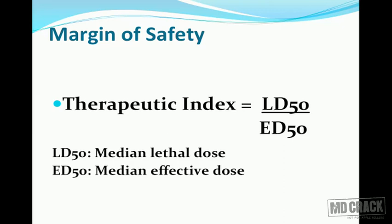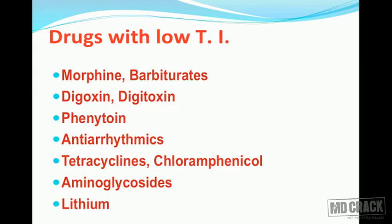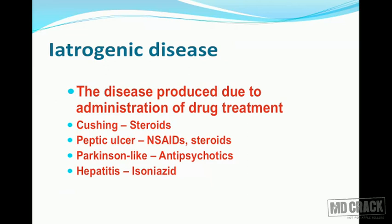The therapeutic index formula is median lethal dose (LD50) divided by median effective dose (ED50). It can also be calculated as median toxic dose divided by median effective dose. Drugs with a very high therapeutic index are comparatively safer and include penicillins and cephalosporins, macrolide antibiotics, aspirin, ibuprofen, and paracetamol. Drugs with a low therapeutic index include morphine, barbiturates, digoxin, digitoxin, phenytoin, anti-arrhythmic agents, tetracyclines, chloramphenicol, aminoglycosides, and lithium.